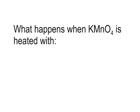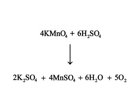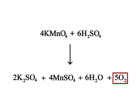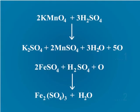Question 3: What happens when KMnO₄ is heated with (A) hot and concentrated H₂SO₄ and (B) acidified FeSO₄? Answer: When potassium permanganate reacts with hot and concentrated sulfuric acid, it forms oxygen gas, potassium sulfate, manganese sulfate and water. Potassium permanganate reacts with ferrous sulfate in two steps as shown on screen.